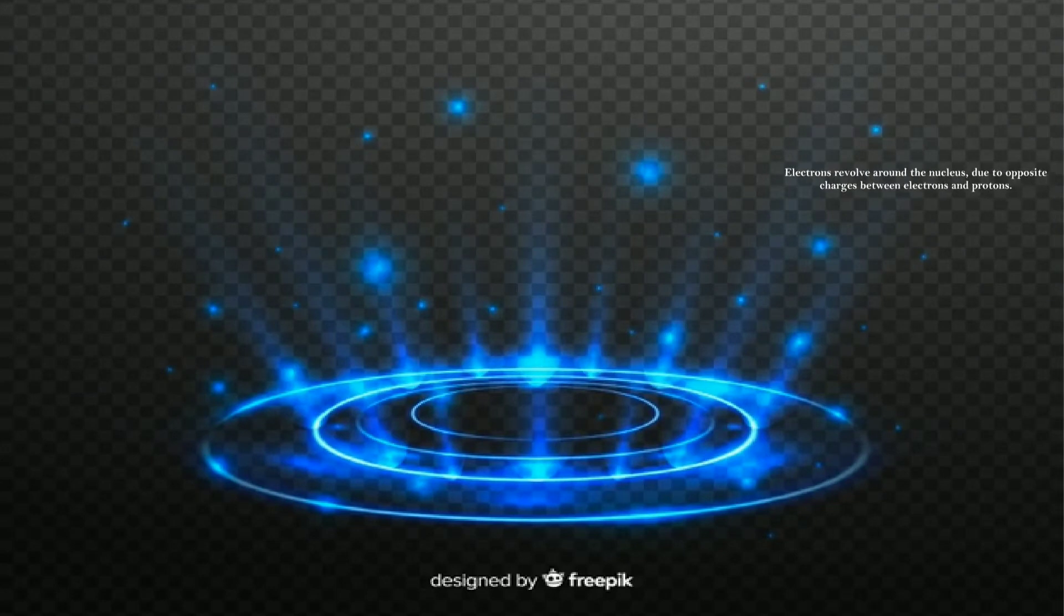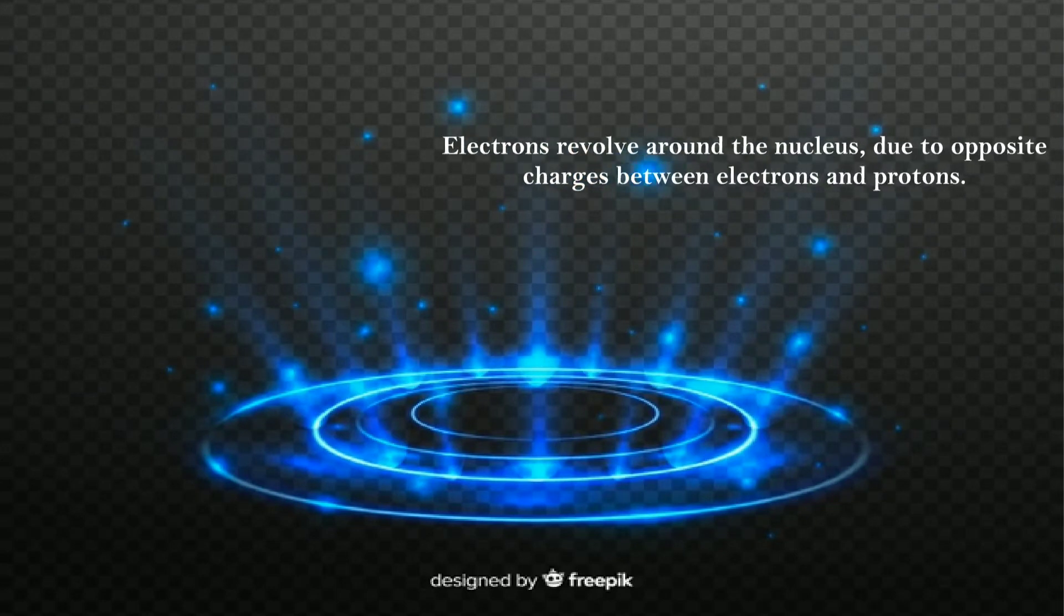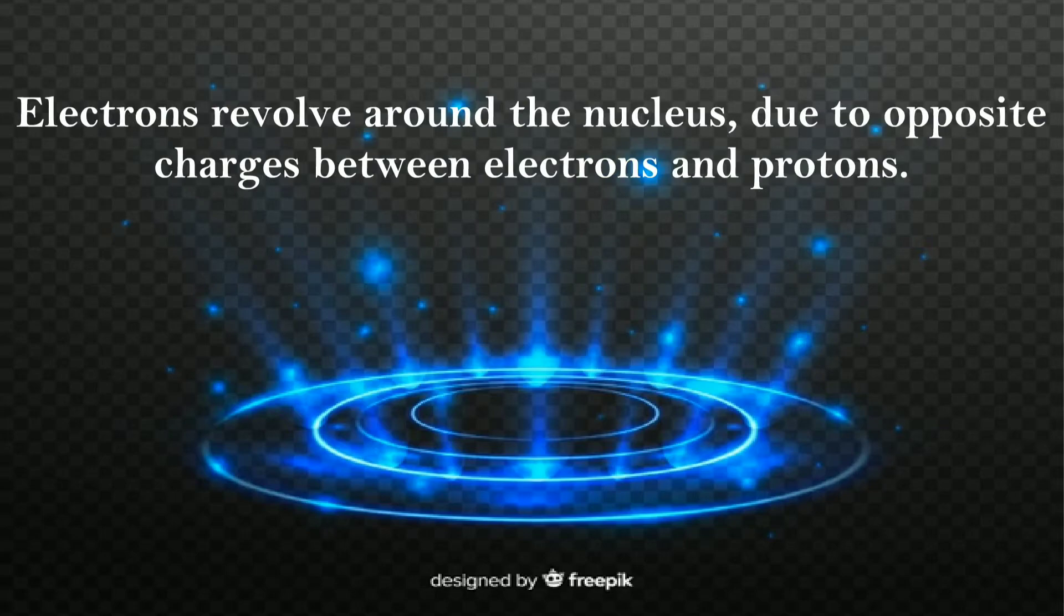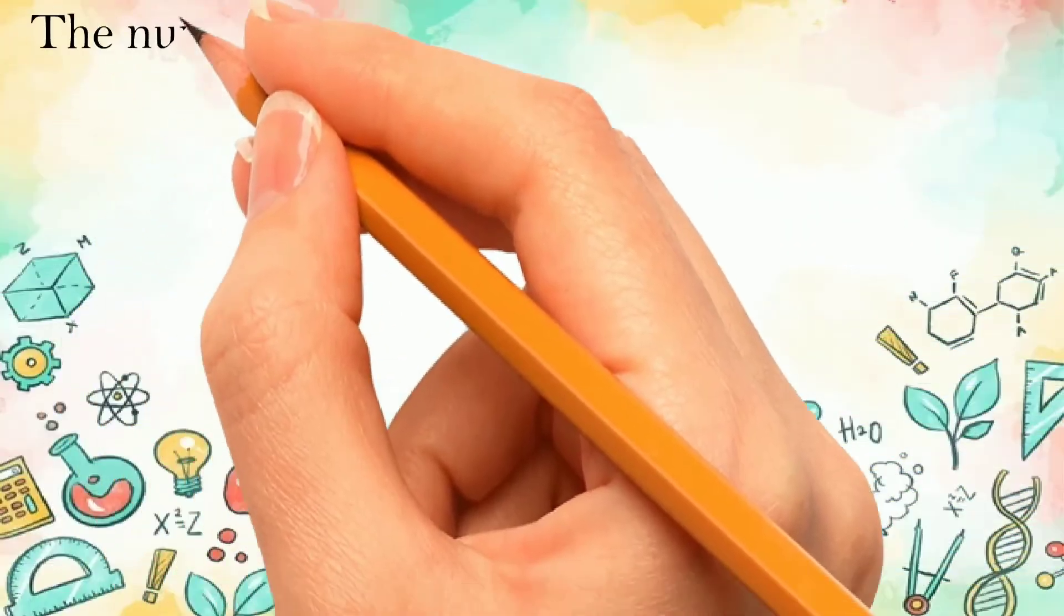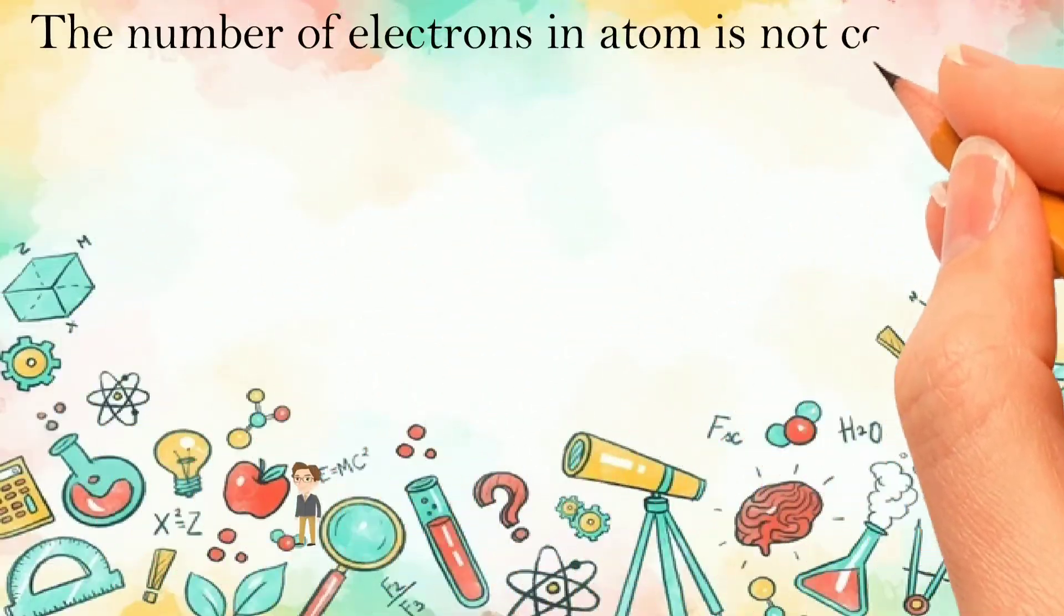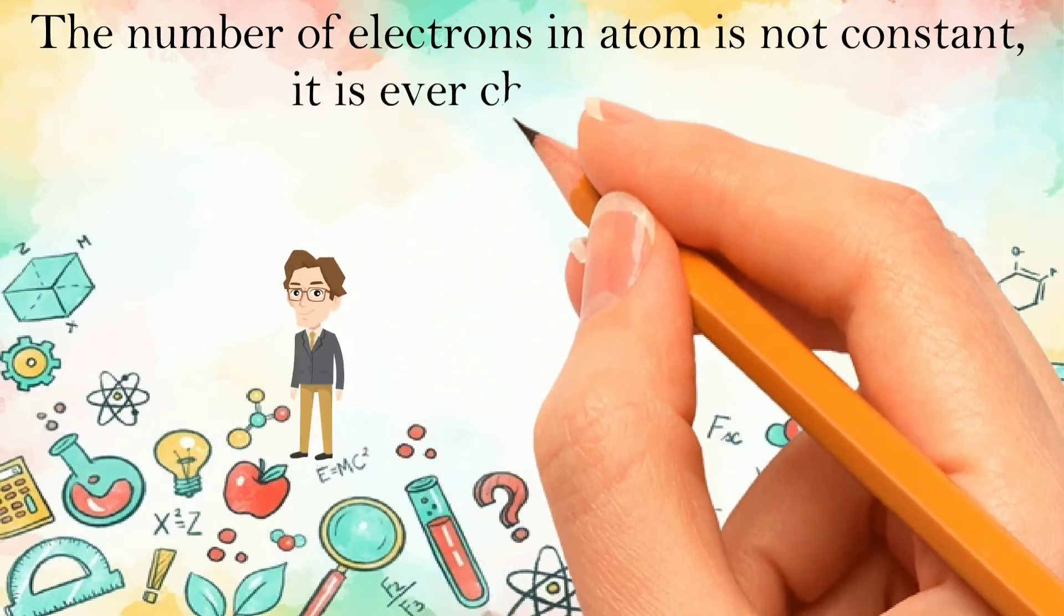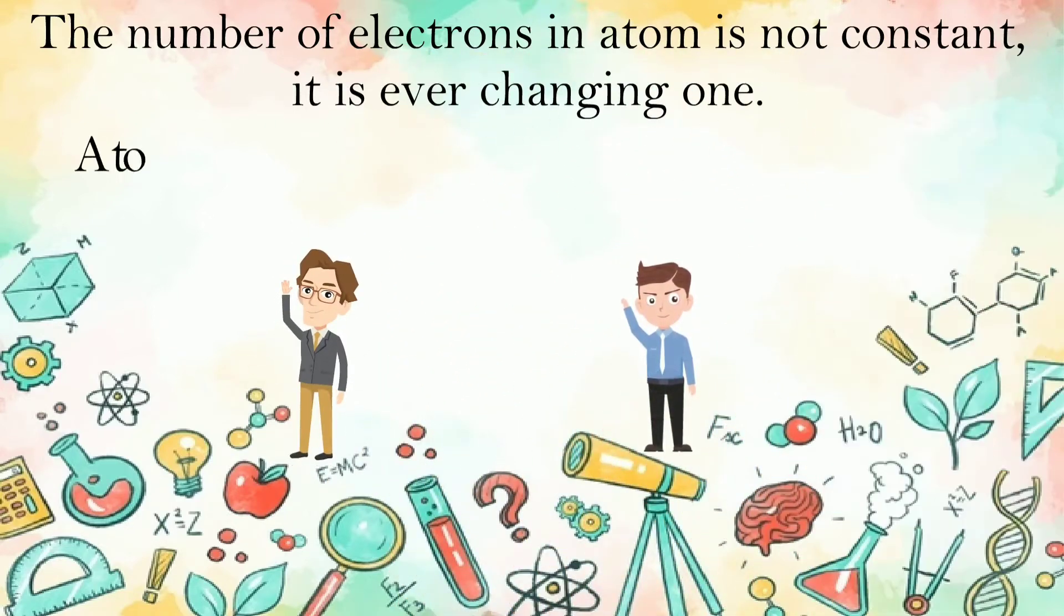Electrons revolve around the nucleus due to opposite charges between electrons and protons. The number of electrons in atom is not constant. It is ever-changing.